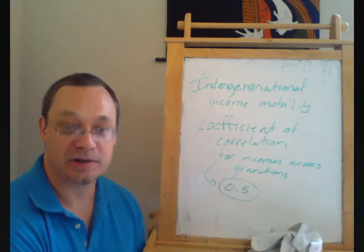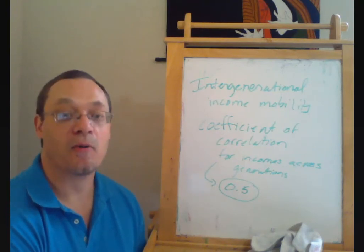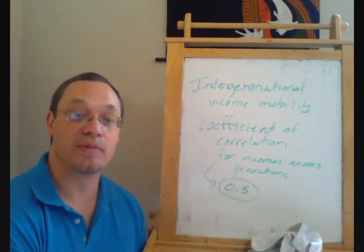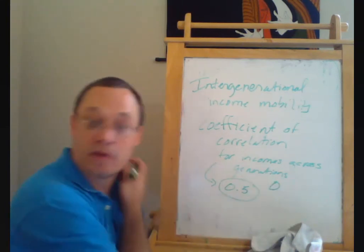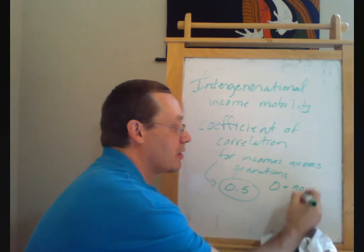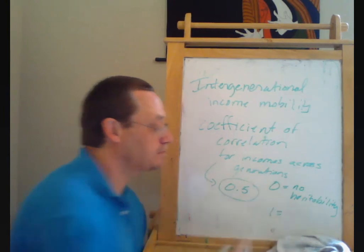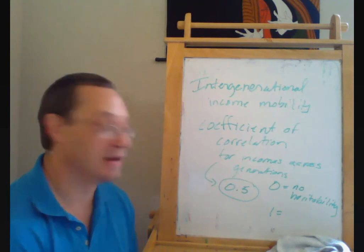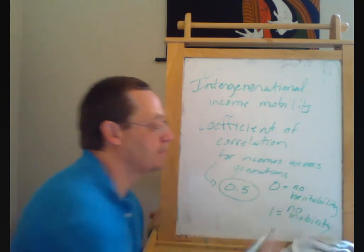The higher this correlation coefficient, the more that income differences are heritable. The more that people who had parents that were low income are likely to be low income themselves and the more that people who have parents that are high income are likely to have high income. And essentially, if we have a correlation coefficient of zero, there's no heritability of income. If we have a correlation coefficient of one, there's no income mobility at all. Income is completely inheritable across generations.